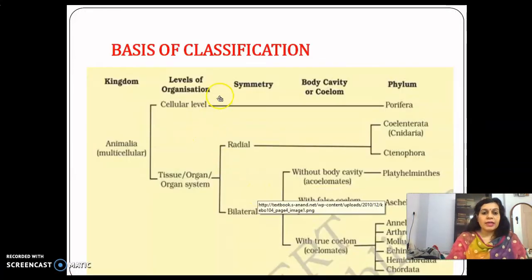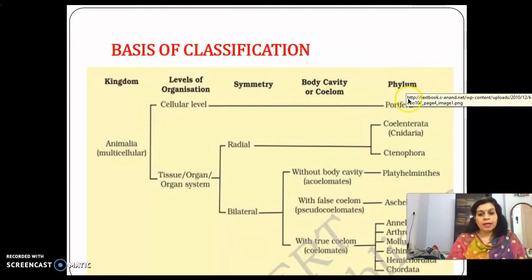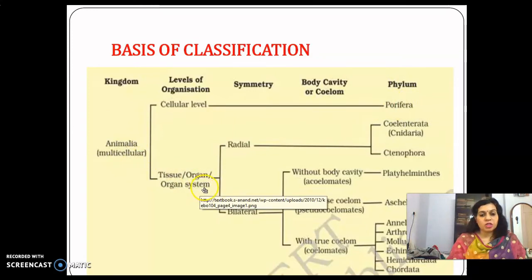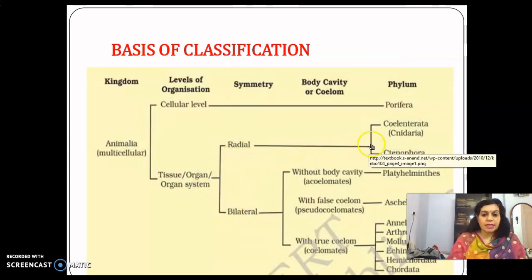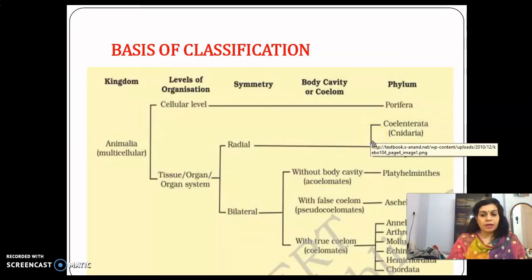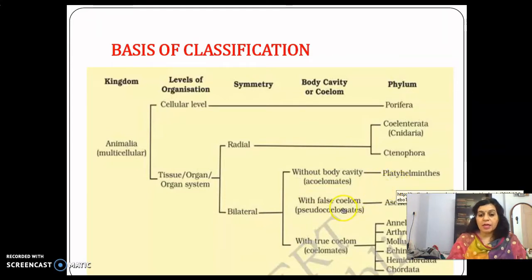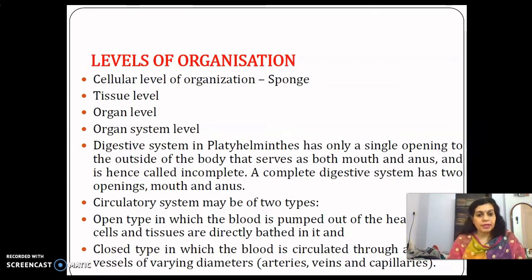The criteria for classifying animals include level of organization, symmetry, body cavity, and phylum. Based on these, animals may show cellular level, tissue level, organ level, or organ system level of organization. For symmetry, radial symmetry organisms fall under phylum Cnidaria and phylum Ctenophora, while bilateral symmetry organisms are divided into acoelomates and coelomates, including phyla such as Annelida, Arthropoda, Mollusca, Echinodermata, Hemichordata, and Chordata.